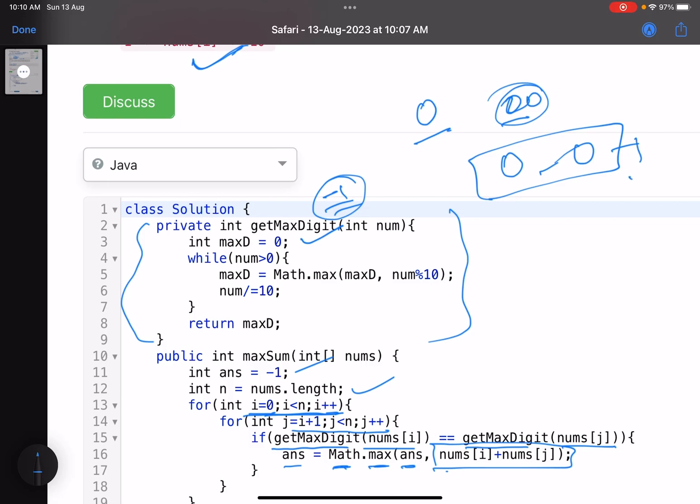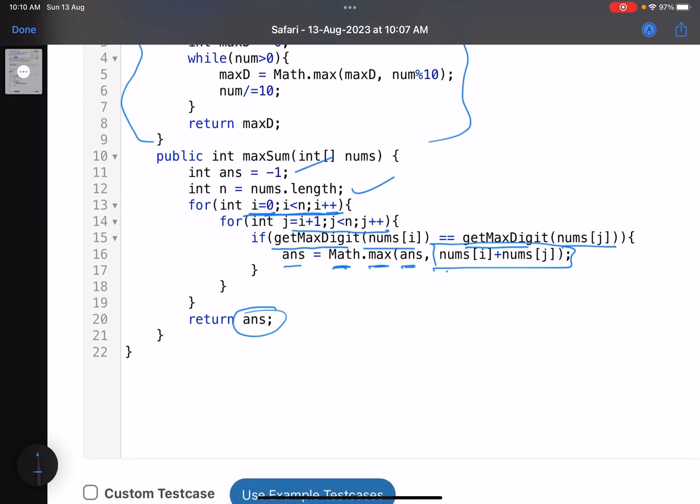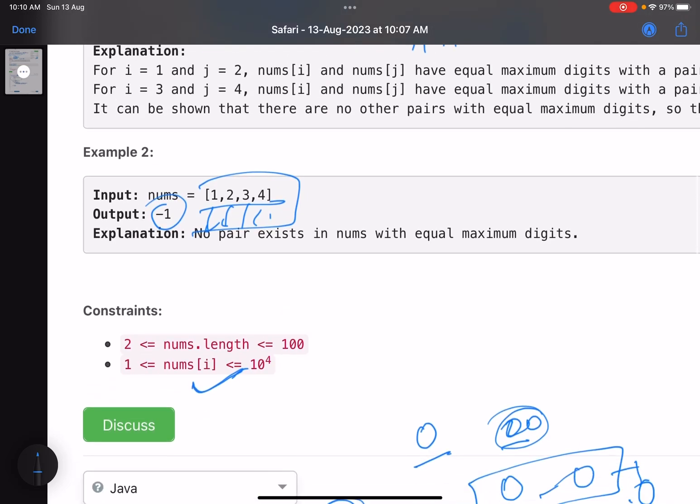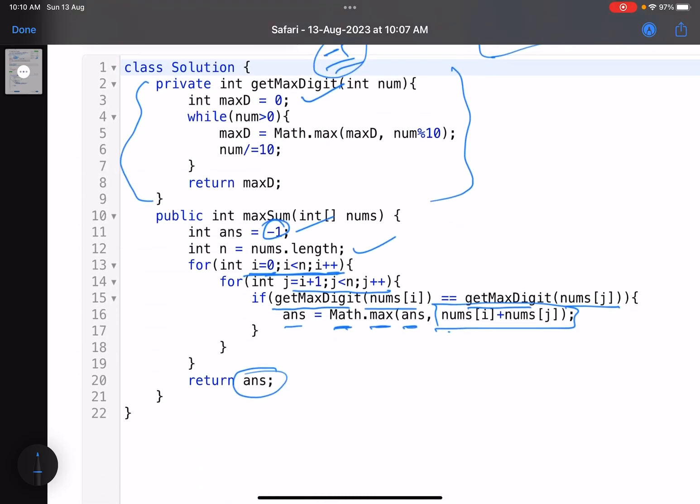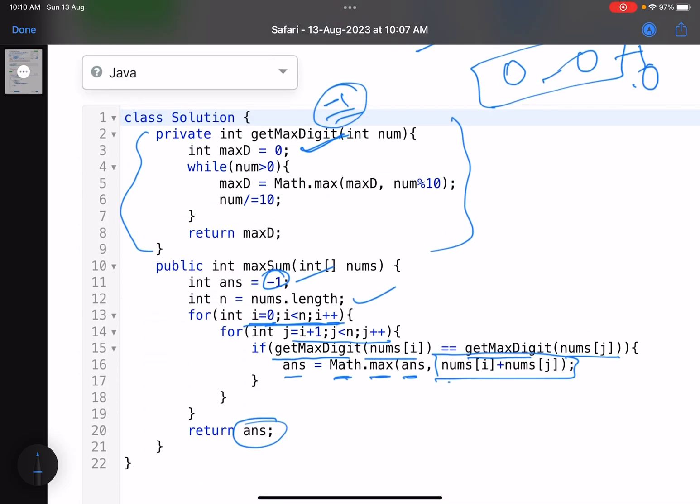So because the maximum digit—I have to choose the numbers with the same maximum digit. So here you have to return zero. The question says you have to return minus one if you cannot form a pair. So yeah, it could be more interesting, but no worries.